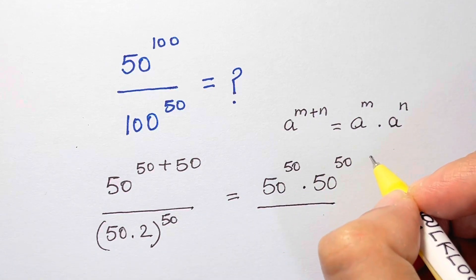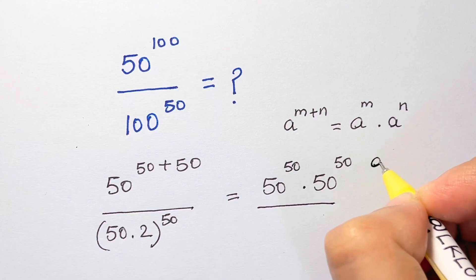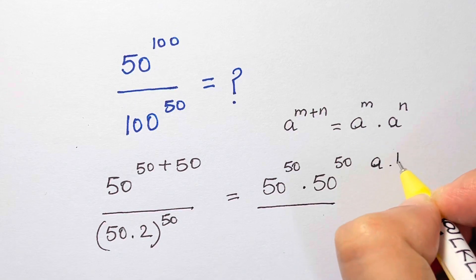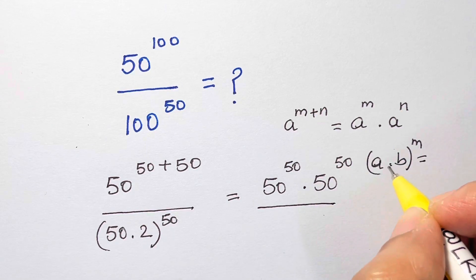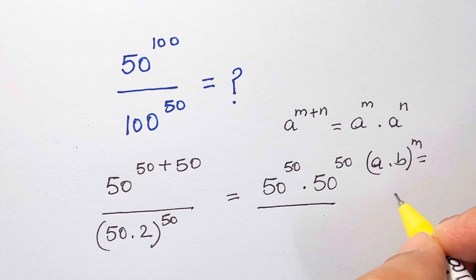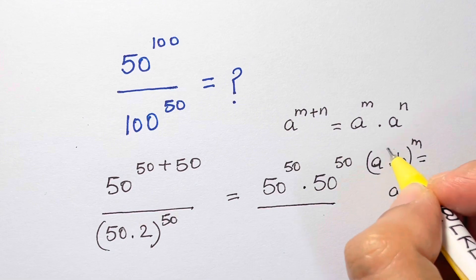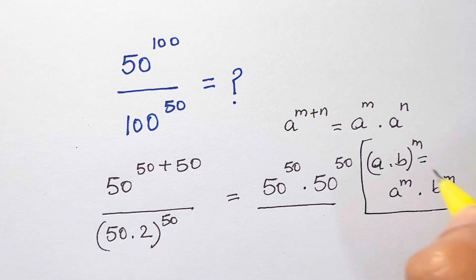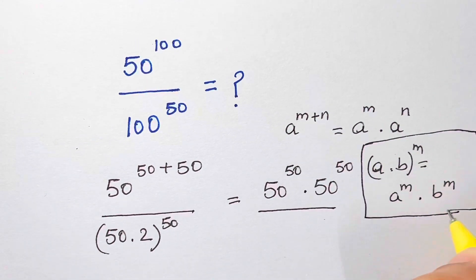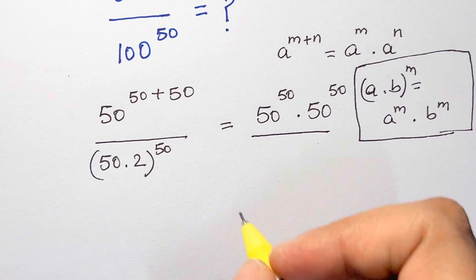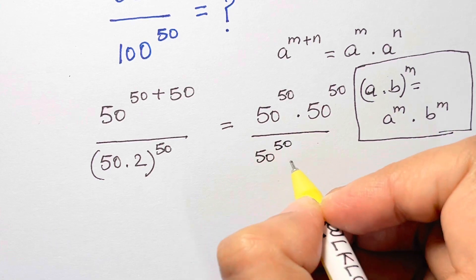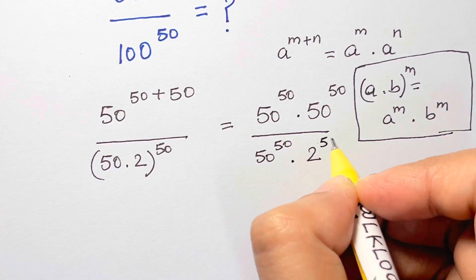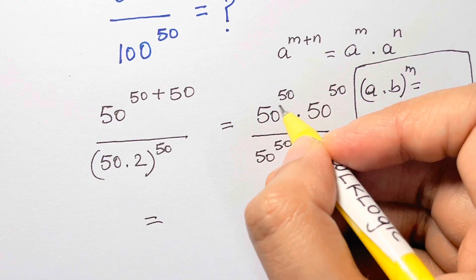What I'm going to apply here again is: whenever you have something like a times b, whole to the power of m, that will be equal to a to the power of m times b to the power of m — the power is distributed to each factor. Applying this here, I get 50 to the power of 50 times 2 to the power of 50.